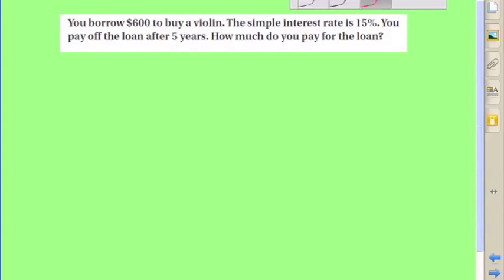You borrow $600 to buy a violin, and everybody knows how cool violins are. The simple interest rate is 15%, that's what you're being charged to borrow that money. You pay off the loan after five years.